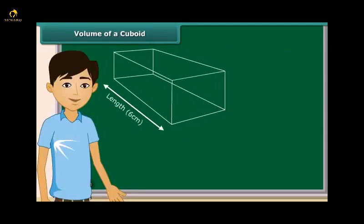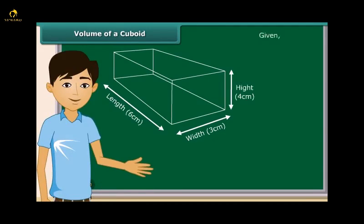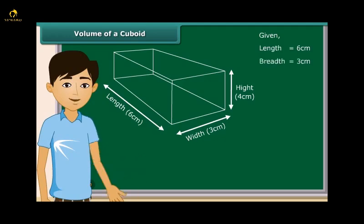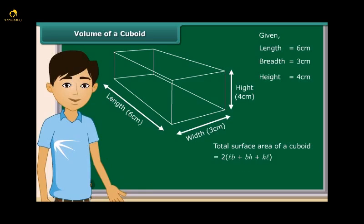Let us take an example. We have a cuboid with length equals 6 cm, breadth equals 3 cm, and height equals 4 cm. Calculating its surface area is not difficult because now we know the formula. Substituting all the values, we get the surface area of this cuboid equal to 108 cm².